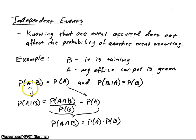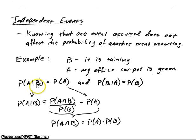So let's suppose we want to look at the conditional probability — the probability of my office carpet is green, given it's raining outside. Let's think about the probability of my office carpet being green. There are lots of colors to choose from, and there's a certain probability that green is chosen. Now, if I know it's raining outside, does that affect the probability that my carpet is green? Obviously, no, it doesn't affect that probability. Knowing something about whether it's raining has no effect on whether someone has chosen green for the carpet. So the probability of A given B is just the same as the probability of A — it doesn't give us any information about A.